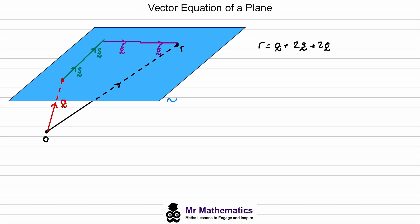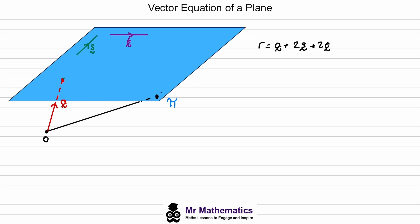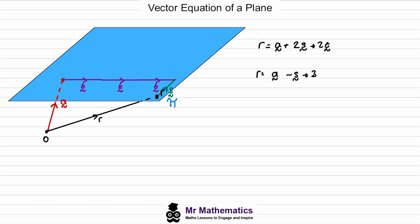We call the plane pi — that's the symbol we use for a plane. We can use our two direction vectors to travel to any point on this plane. For instance, to get to another point r, we go back to the fixed point on the plane, then across by 3t, and travel in the opposite direction to s, which is negative s. So in this case r equals the position vector a, minus s, plus 3t. By using this position vector and the two direction vectors, we can travel to any point on this plane.